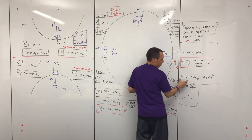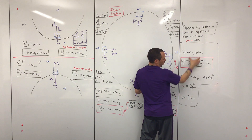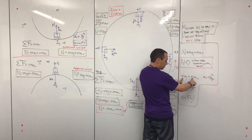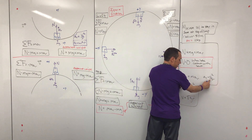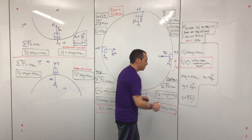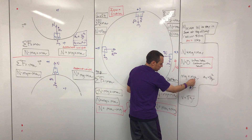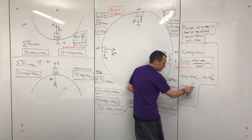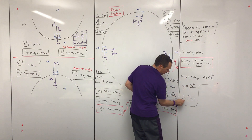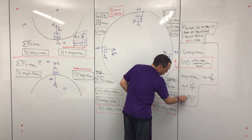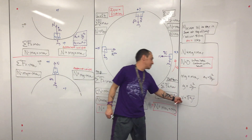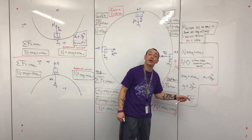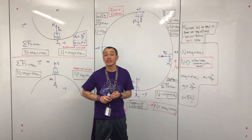That speed v = √(gr) is the speed at which you lose contact. So any speed above this and you will stay in your seat at the top of the loop. That's how you answer this question — the minimum velocity required to maintain contact is the square root of g times r.